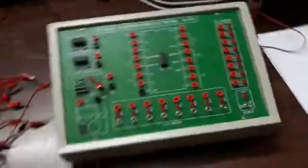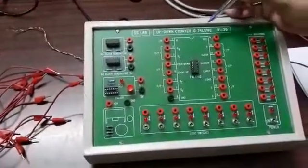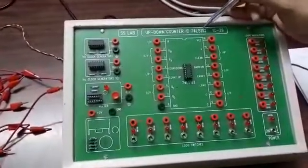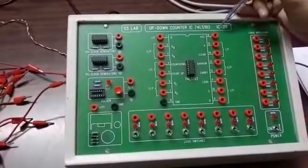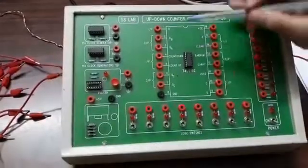Apparatus required for this experiment: trainer kit, patch cords, and power supply. This circuit contains IC 74LS192, which is able to do up count from 0 to 9 and down count from 9 to 0.